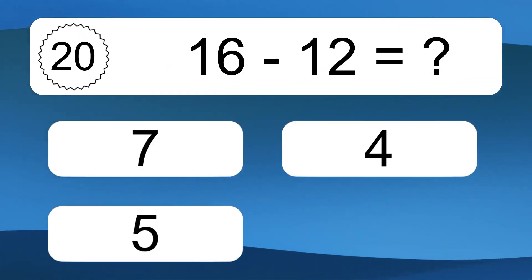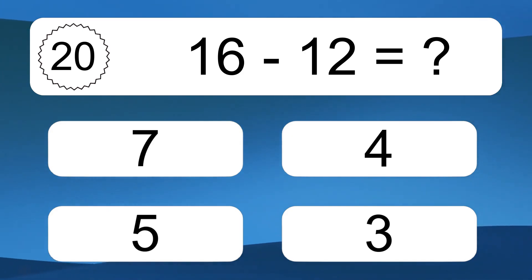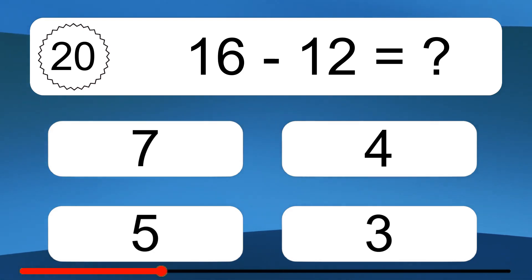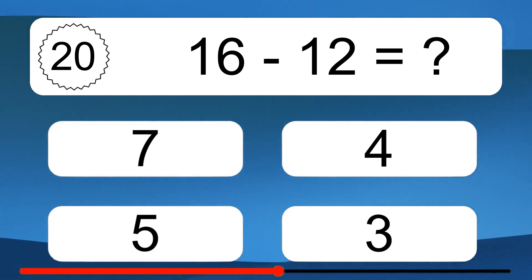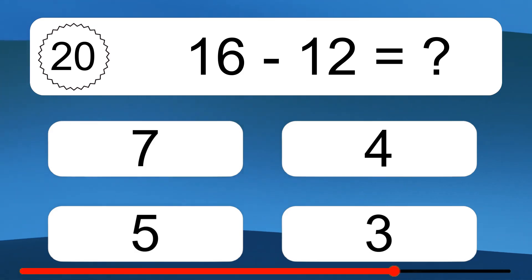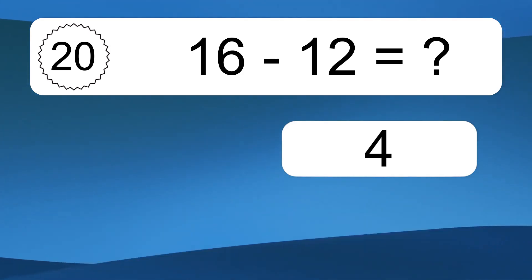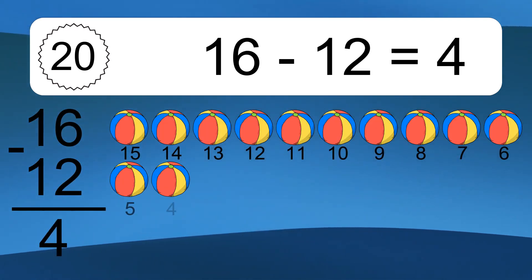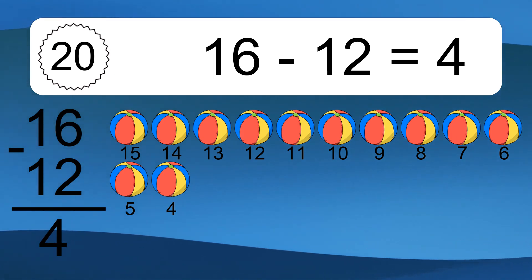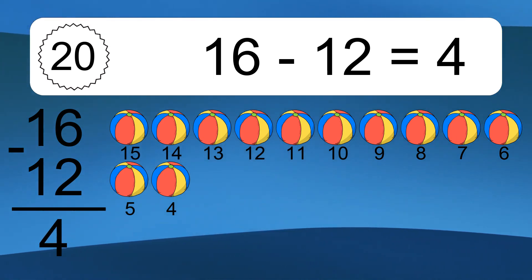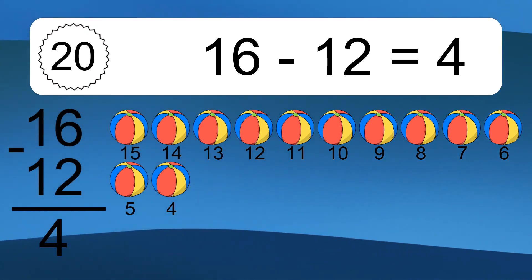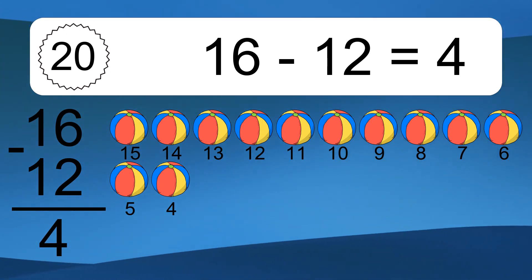16 minus 12 equals what? 16 minus 12 equals 4. Let's count it: 15, 14, 13, 12, 11, 10, 9, 8, 7, 6, 5, 4.